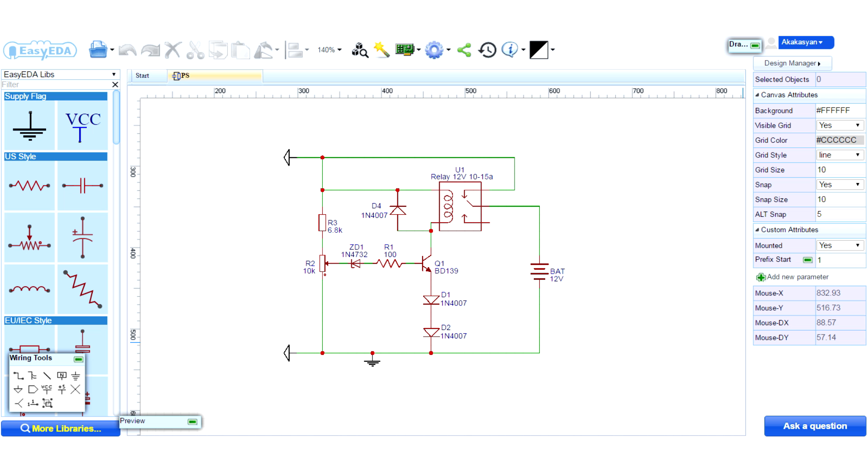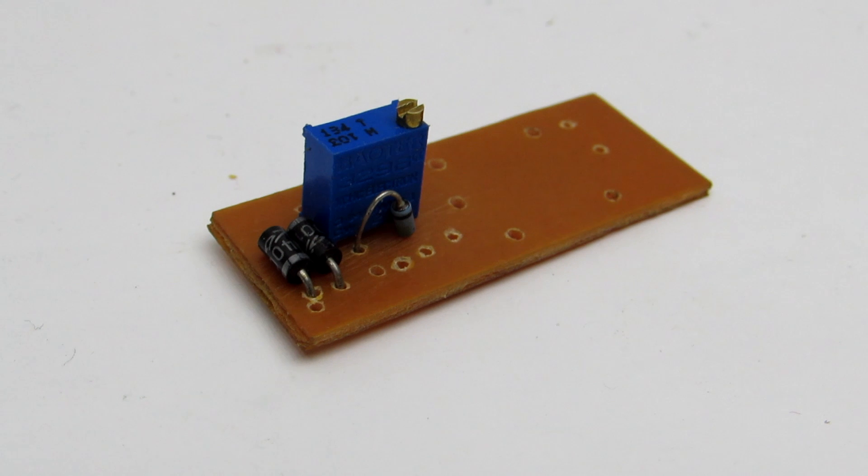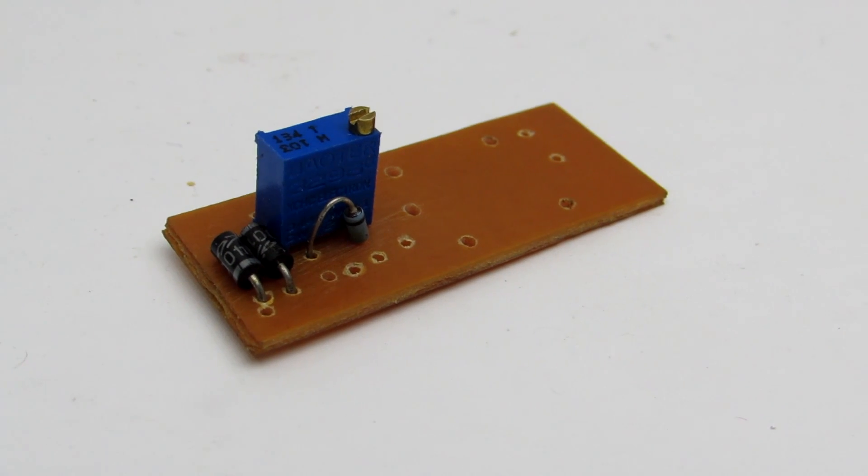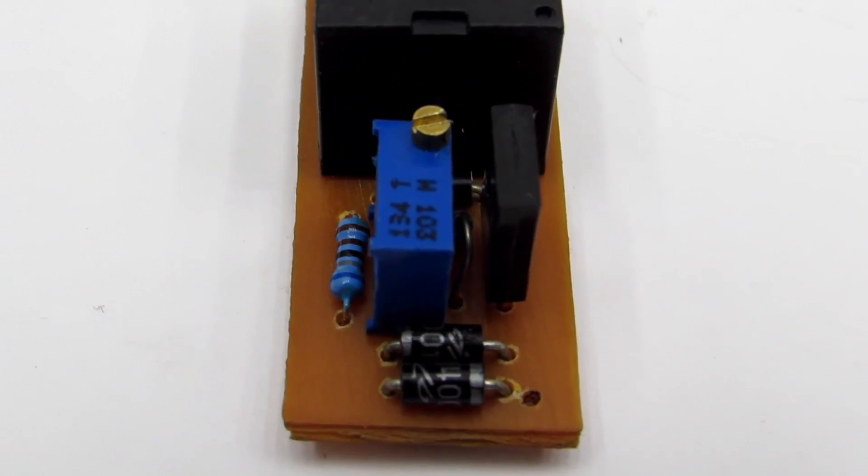Adding to the base circuit the zener diode will solve these problems and we will be able to more accurately set the correct operation voltage. For adjustment I advise to use multi-turn trimmer.